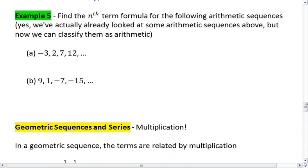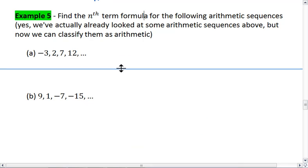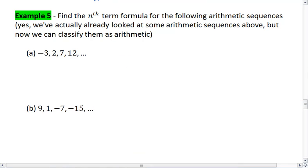Here's some examples. Find the nth term formula for the following arithmetic sequences. We did look at a couple of examples of arithmetic sequences above, but now we are going to use the explicit formula. So for part a, we notice to get from one term to the next, we add 5. This means the common difference is 5 and our first term is negative 3.